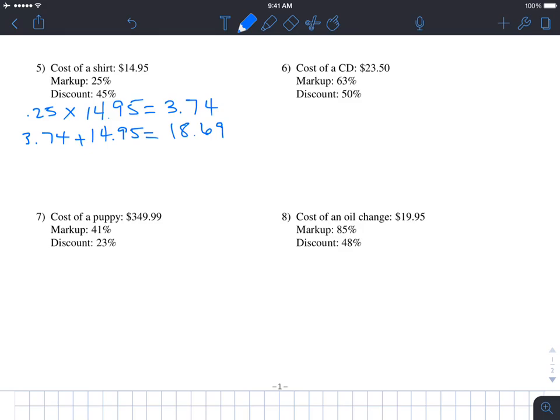Now let's say a customer comes in with a coupon for 45% off. That's 45% off the $18.69. We calculate the discount: 0.45 times $18.69 equals $8.41. We subtract that from $18.69: $18.69 minus $8.41 equals $10.28. The only difference is that we're doing the same process, but instead of adding, we're subtracting the discounted price.